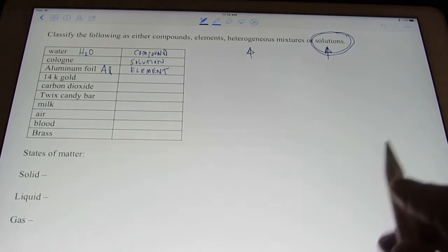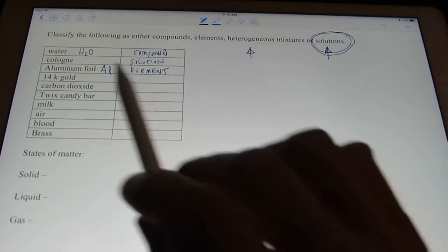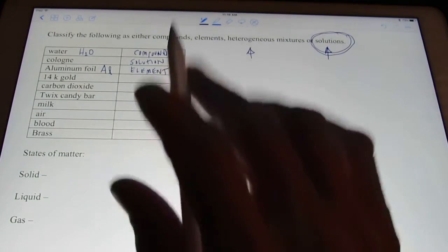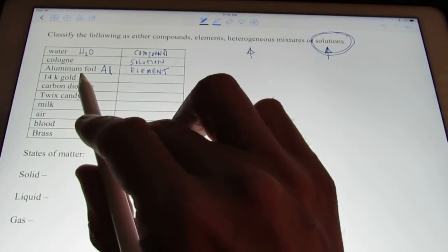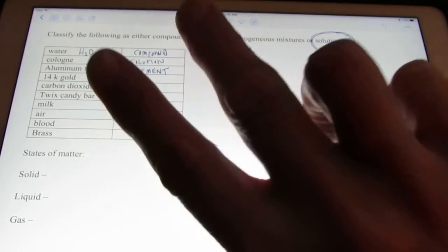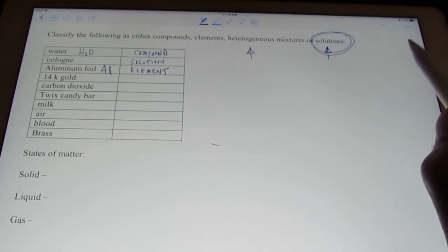Now, 14 karat gold. That's sort of tricky. Now, 24 karat gold is 100% gold. It would be an element. 14 karat gold is an alloy. It's a homogeneous mixture of two or more different elements.